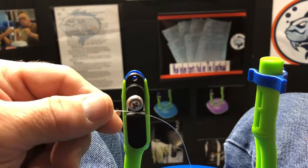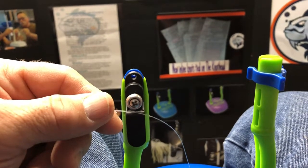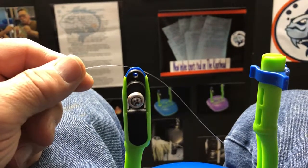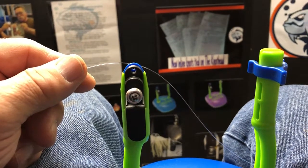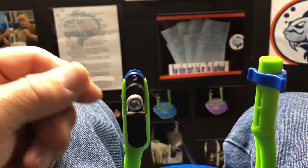But this turn here that I'm going to show you is a surgeon's loop knot and it's really great. You can tie it with braid, fluoro, mono, and others and it really works out pretty great.